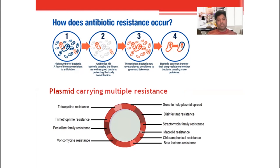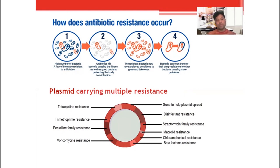Now I would like to talk about plasmid-mediated multiple resistance. Bacteria may have a plasmid — a small circular piece of genetic material comprising different kinds of genes. These genes are able to compete against drugs and produce resistance against antibiotics — such as tetracycline, trimethoprim, rifamycin, or lincomycin. Whenever these drugs are given to the patient, bacteria produce resistance, destroy the drug, the drug becomes inactive, bacteria survive inside the patient's body, and the infection produces its complications.